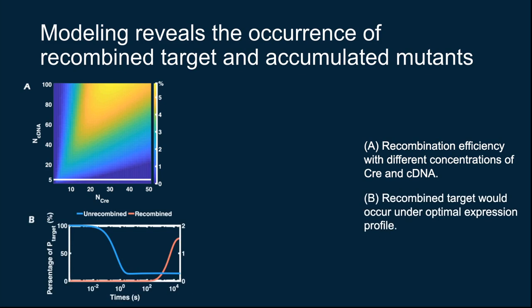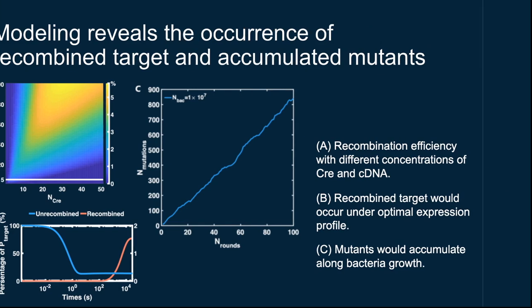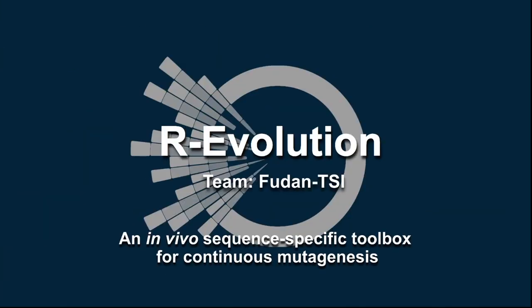What's more, the modeling result also demonstrated the mutation accumulation accompanying this bacterial growth. In our simulation, mutation would take place and accumulate as time flows and cell replicates, which proves the continuous mutation of our system. Now, let me say this again. We hereby present to you the Revolution system, which facilitates continuous mutagenesis of a specific sequence inside a cell.